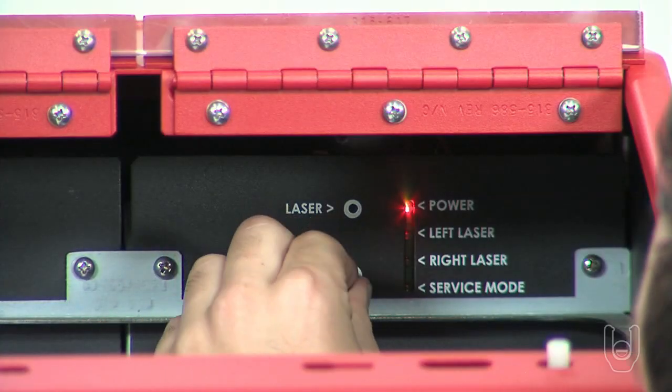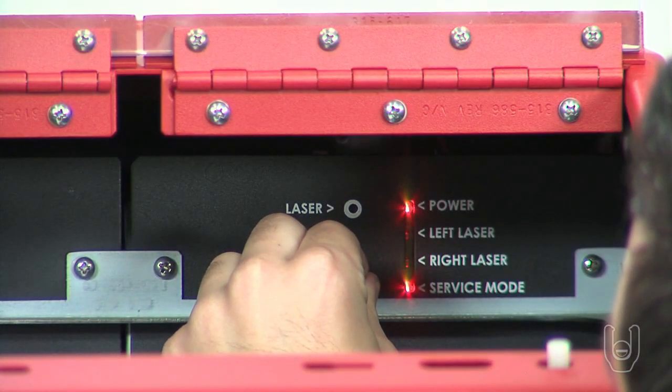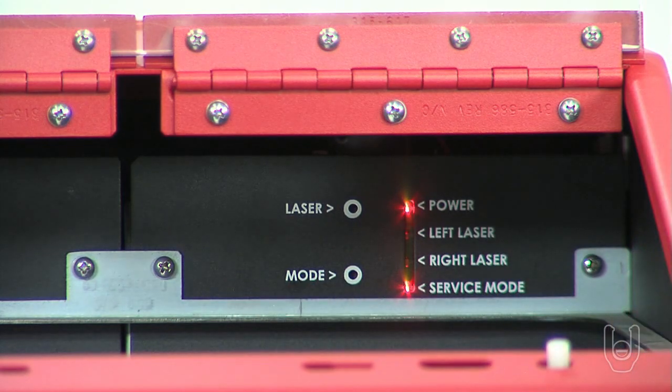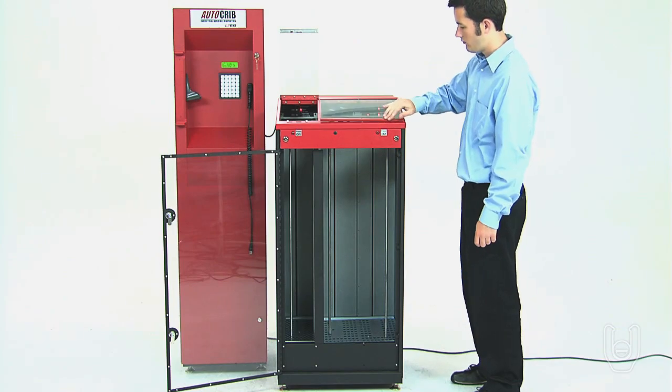Depress the mode button until the status light flashes several times. The service mode light should come on steady. The lifter is now in service mode. Now close the bin door.